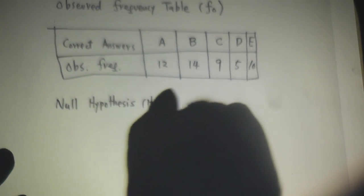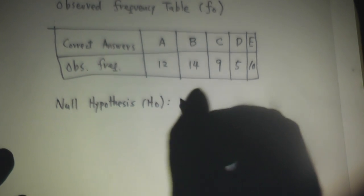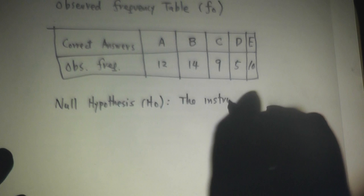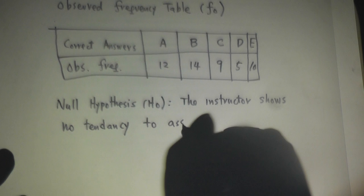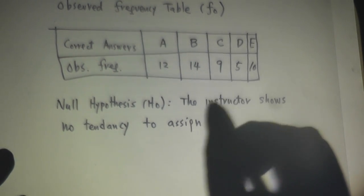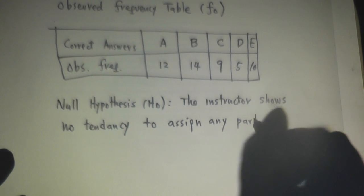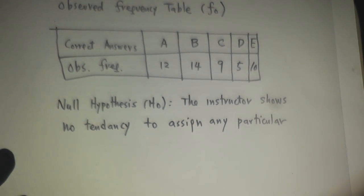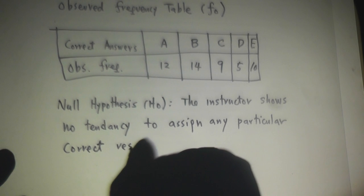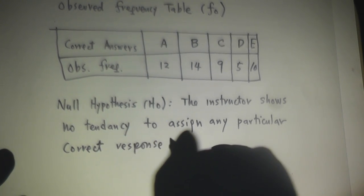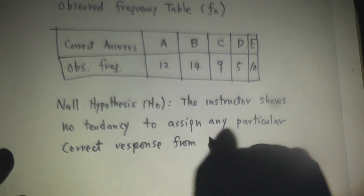The null hypothesis is that the instructor shows no tendency to assign any particular correct responses from A to E.